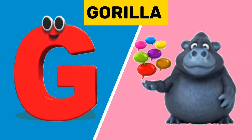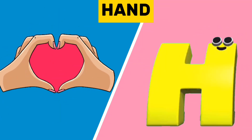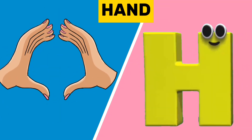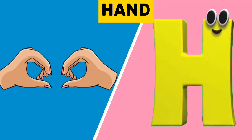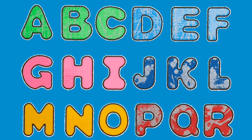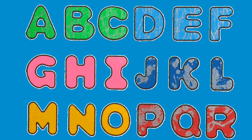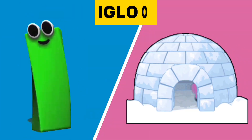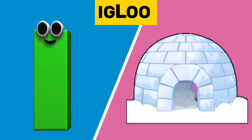F. G is for Gorilla. G, G. Gorilla. H is for Hand. H, H. It's the letters of the alphabet!